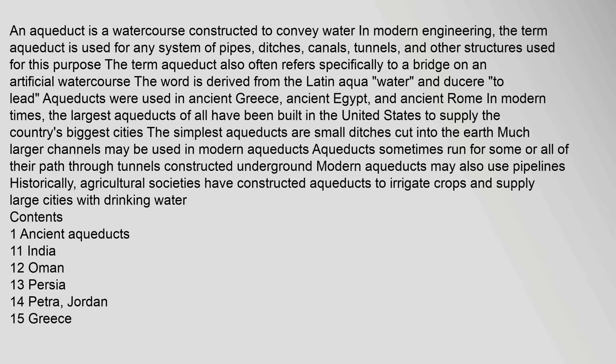An aqueduct is a watercourse constructed to convey water. In modern engineering, the term aqueduct is used for any system of pipes, ditches, canals, tunnels, and other structures used for this purpose. The term aqueduct also often refers specifically to a bridge on an artificial watercourse. The word is derived from the Latin 'aqua' and 'ducere.' Aqueducts were used in ancient Greece, ancient Egypt, and ancient Rome. In modern times, the largest aqueducts of all have been built in the United States to supply the country's biggest cities. The simplest aqueducts are small ditches cut into the earth, though much larger channels may be used in modern aqueducts. Aqueducts sometimes run for some or all of their path through tunnels constructed underground, and modern aqueducts may also use pipelines.